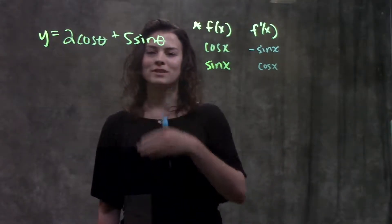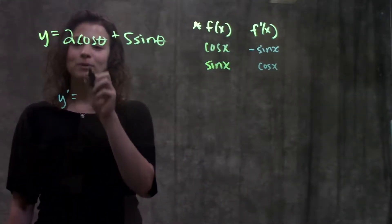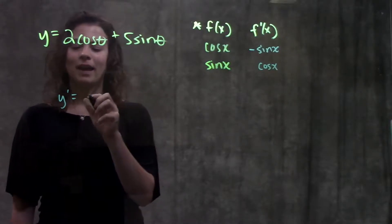So let's apply these rules to this problem. It gives us this function and asks for the derivative. To find the derivative, we take the derivative of each part and add them together.